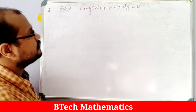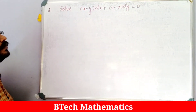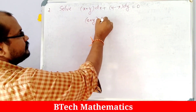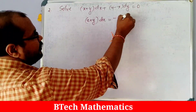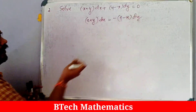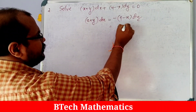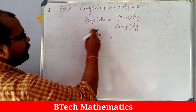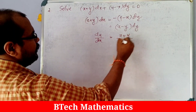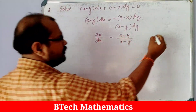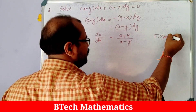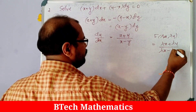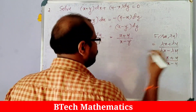For the second problem: solve (x plus y) dx plus (y minus x) dy equals 0. Rearranging, x plus y times dx equals minus(y minus x) dy, which is x minus y times dy. So dy/dx equals x plus y divided by x minus y. Substituting lambda x and lambda y, we get lambda x plus lambda y over lambda x minus lambda y, which simplifies to x plus y over x minus y. So this is also a homogeneous equation.